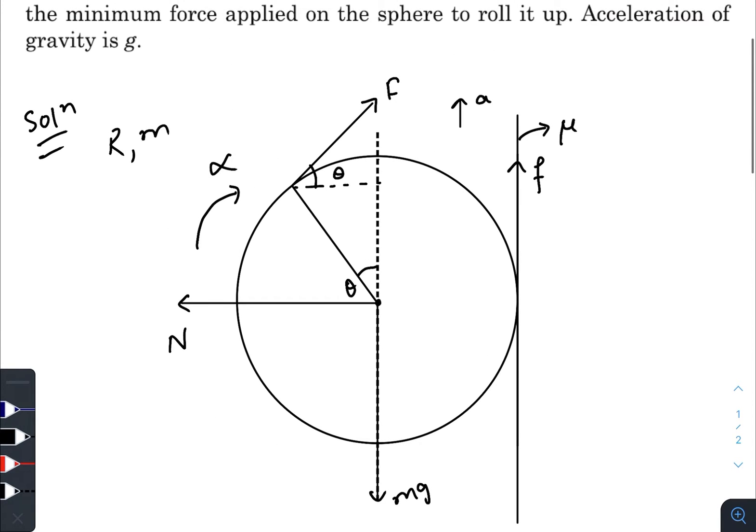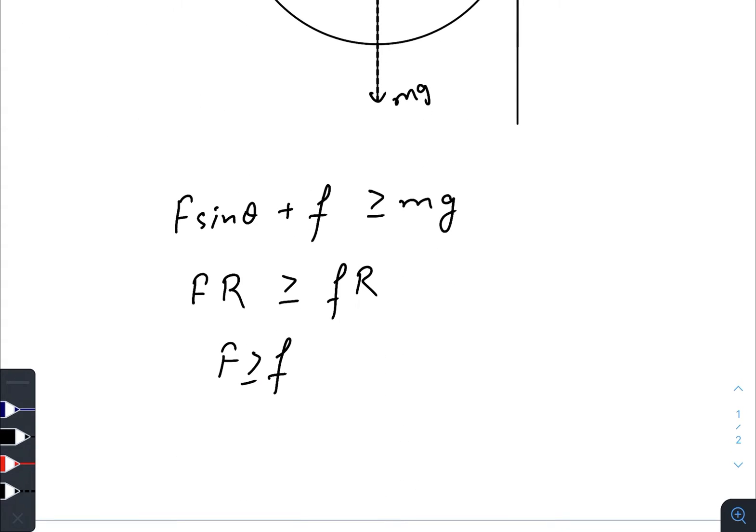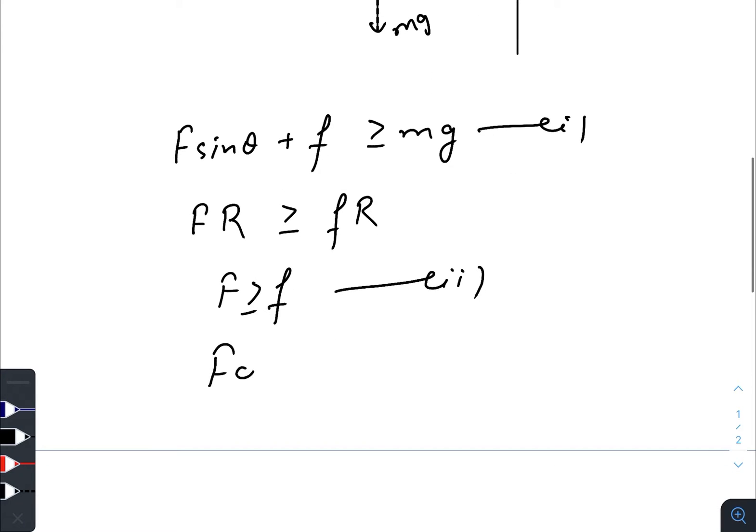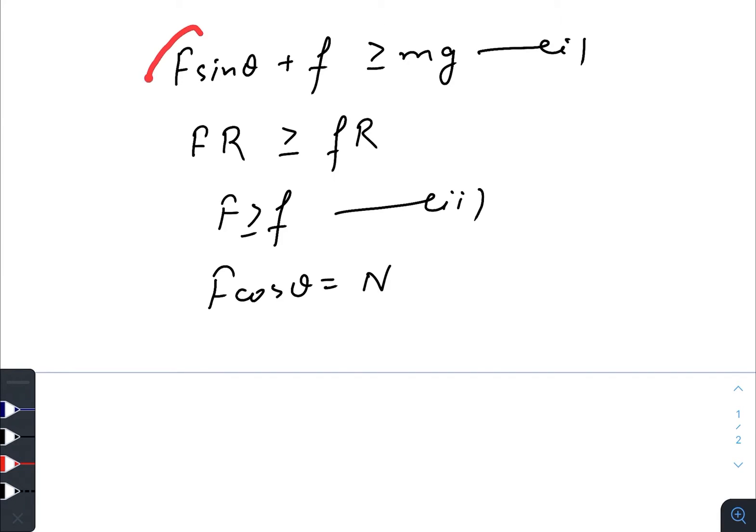And another one: the net force on the right-hand side, that is F cos θ, must be equal to the normal. So this is the first one, second one, and F cos θ equals normal. Now we need to find out the minimum value of capital F.